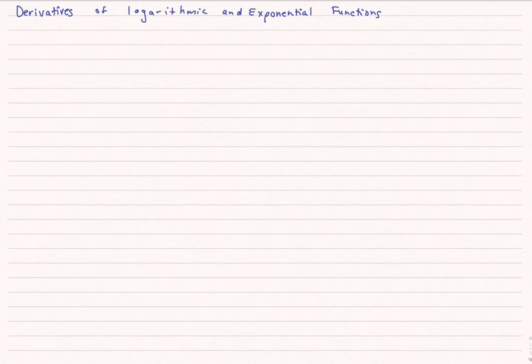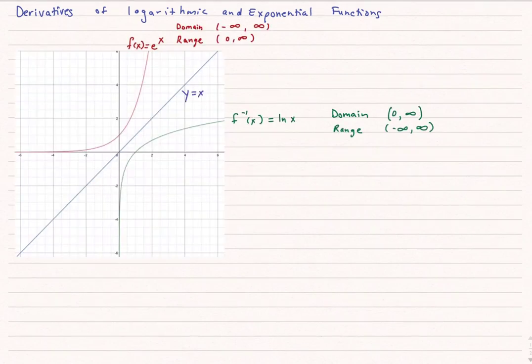Two more types of functions we need to learn how to take the derivatives of are logarithmic and general exponential functions. As a reminder, here's a graph of e to the x, which has a domain of negative infinity to infinity and a range of zero to infinity. The inverse function, reflected over the line y equals x, is natural log of x, with domain zero to infinity and range negative infinity to infinity.